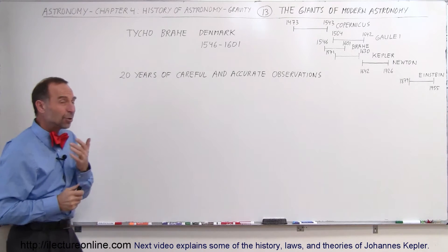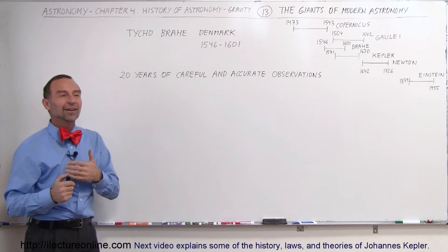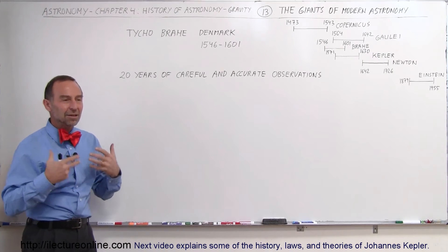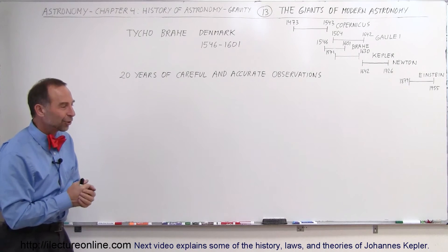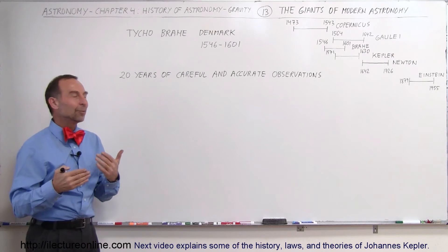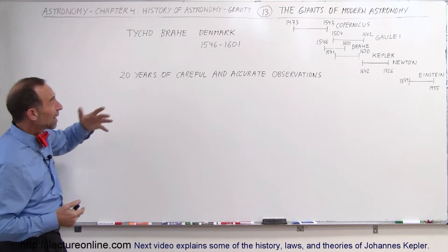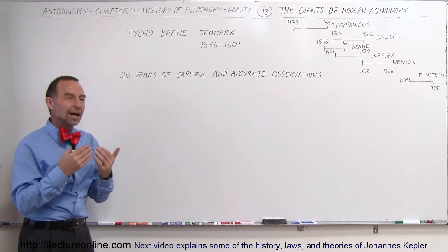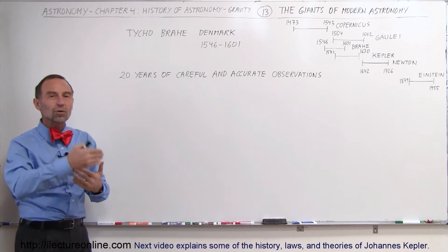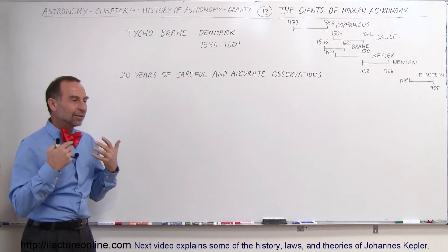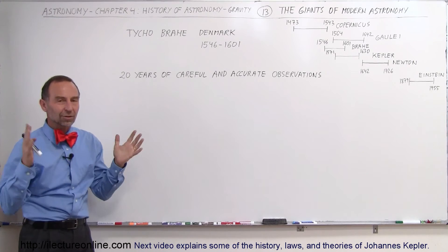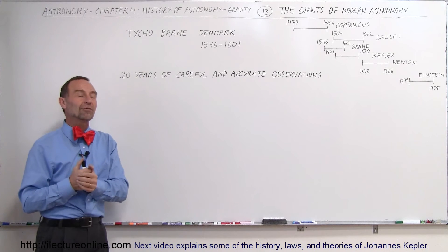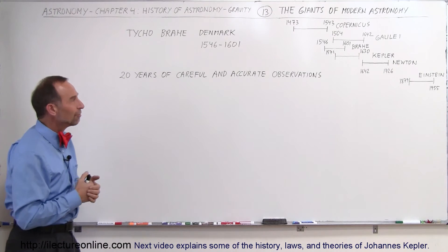Now, it turns out that Tycho Brahe was probably not a very nice man to be with as he had a very hot temper and he really could get in your face, so to speak, in today's terms. And it turned out in about 1597 or so, towards the end of his lifespan, he really got into an argument with the king. There was a new king of Denmark and the king wouldn't have any of it and he said, you know, you're no longer welcome to work for me.